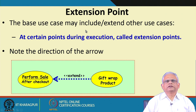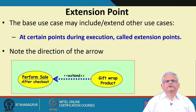We might also indicate the extension point during include and extend — that is, at what point of execution the use case gets included or extended. We indicate that with a line and write the point of extension. For example, 'gift wrap product' may get invoked after the checkout. Once the sale is performed and checkout is done, the gift wrap product option will be shown; if not selected, the use case completes. This is called the extension point.